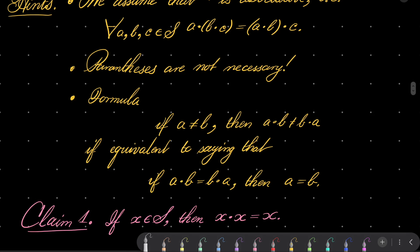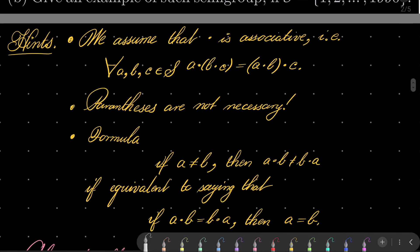Here are my hints. First, we assume that our operation dot is associative, because it's one assumption about any semigroup. So that means that for any three elements a, b, c, we can put parentheses freely. a·b·c equals a·b·c. So putting parentheses is not necessary. The order of putting elements is important, but parentheses are not. Notice also this well-known fact from logic that the formula 'if a ≠ b then a·b ≠ b·a' is equivalent to saying that 'if a·b = b·a then a = b.'